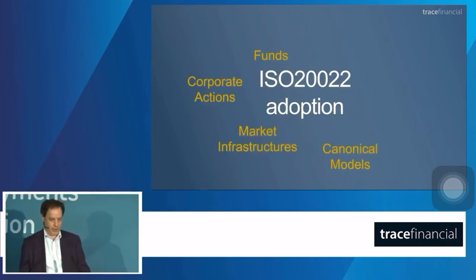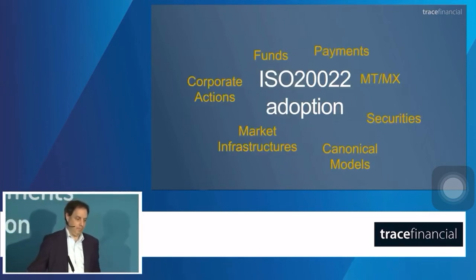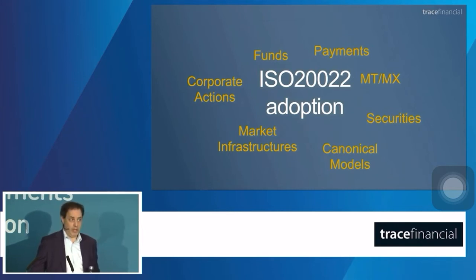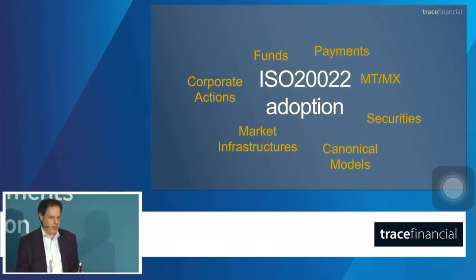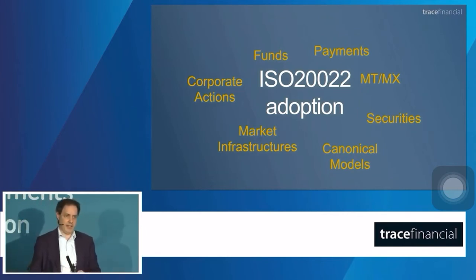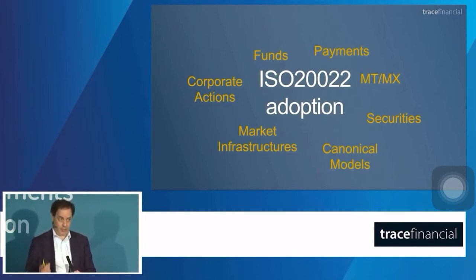ISO 20022 adoption — like it or not, it's coming. By 2025, SWIFT payments will be on 20022. By 2021, you can coexist sending MT and 20022 payments. If you're not interested in sending 20022 payments in 2021, fine. But you are expected to receive CAMT messages at the other side. That's the kicker. People think, well, I'm not sending — I'm just going to keep sending 101s and 103s, it's fine. But the things that get spat out at the other end are CAMT messages. So you've got to be ready and you've got to be prepared. This should be hair-on-fire time at the moment.